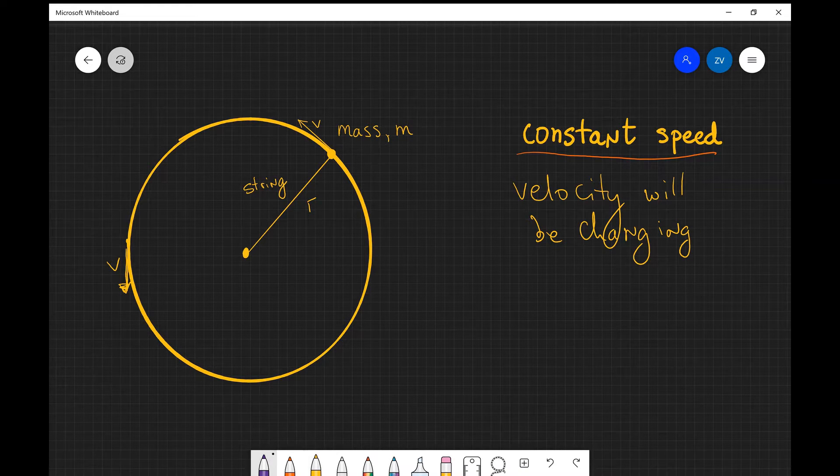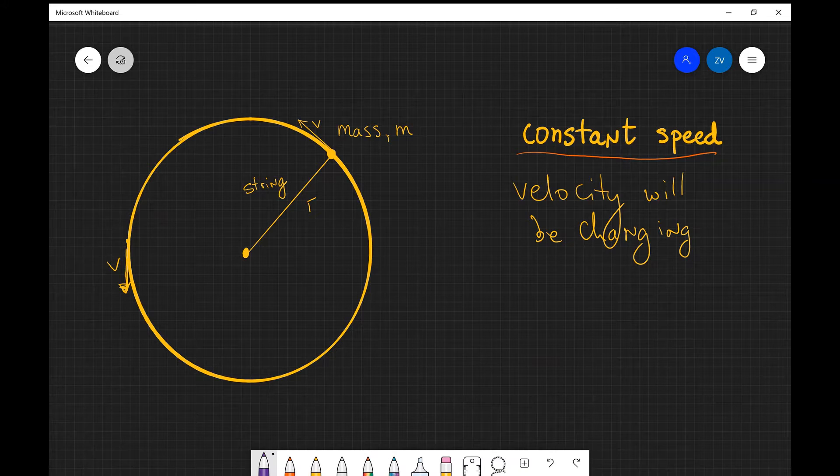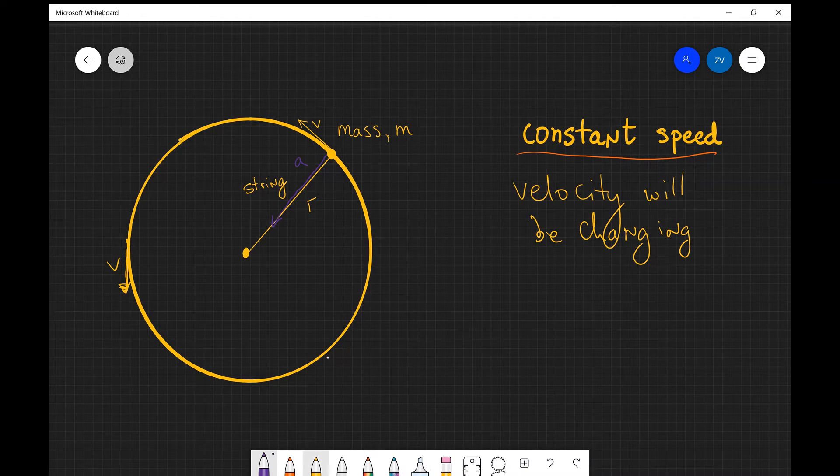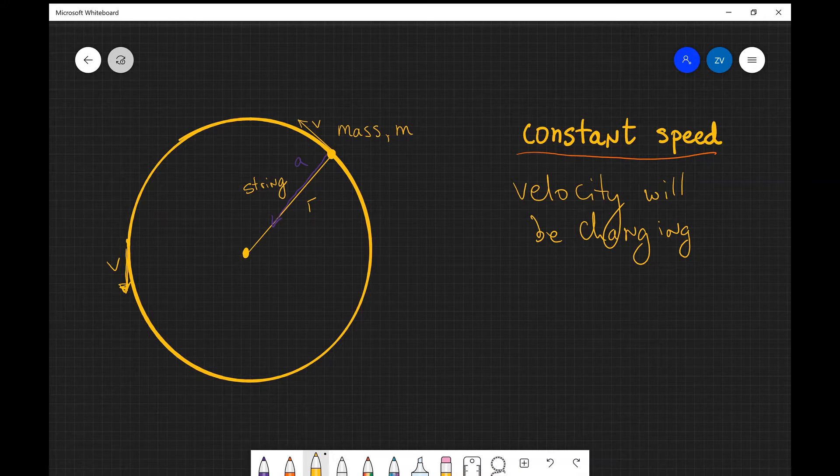In fact, the acceleration of this mass will be always pointing towards the center. So we can represent that with a separate vector, we can call that a, which will be pointing towards the center. This is what actually centripetal means. It means center seeking, I believe, in Latin. So the acceleration will be pointing towards the center. Let's just write that down.